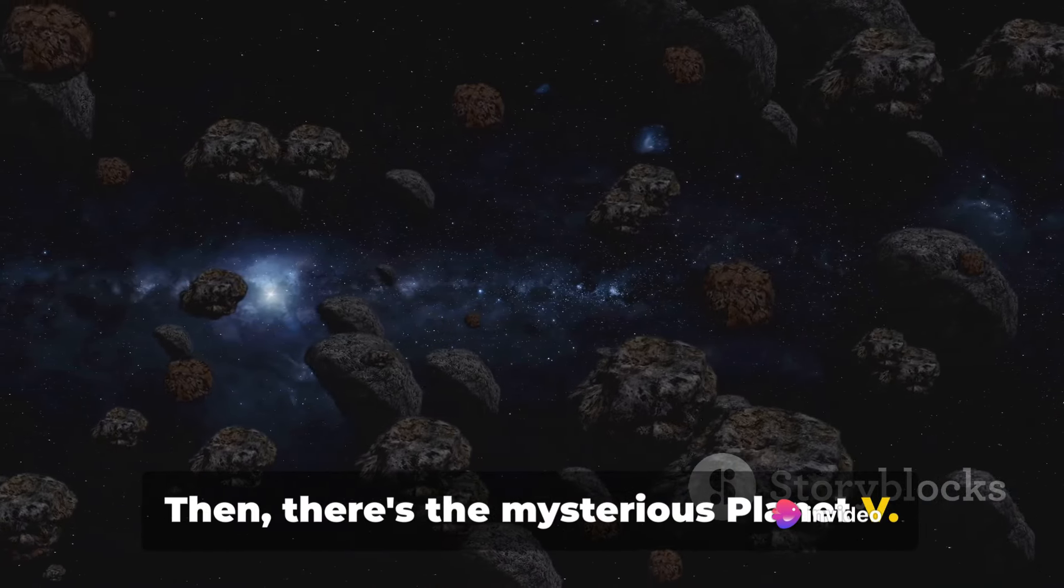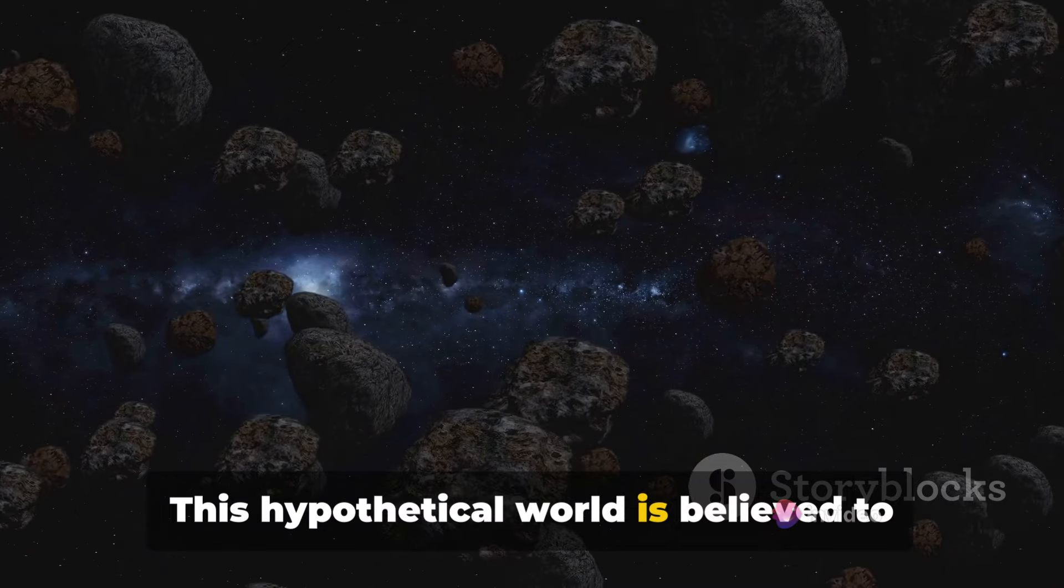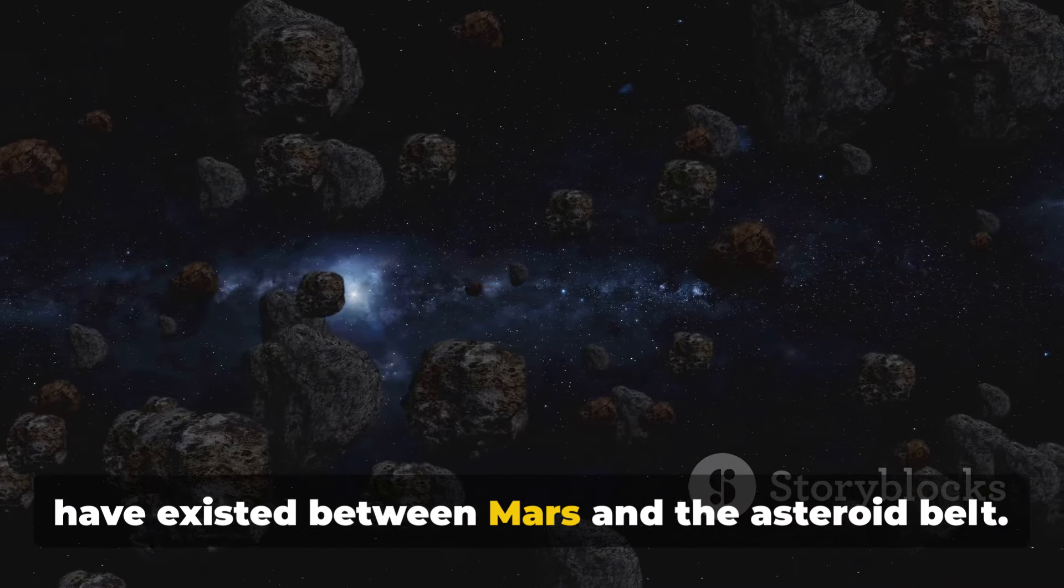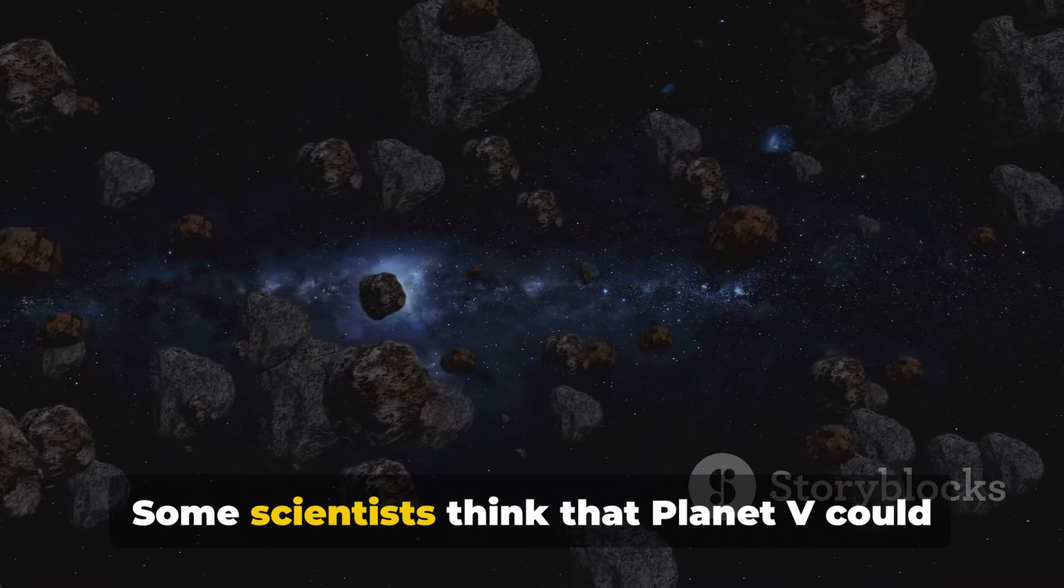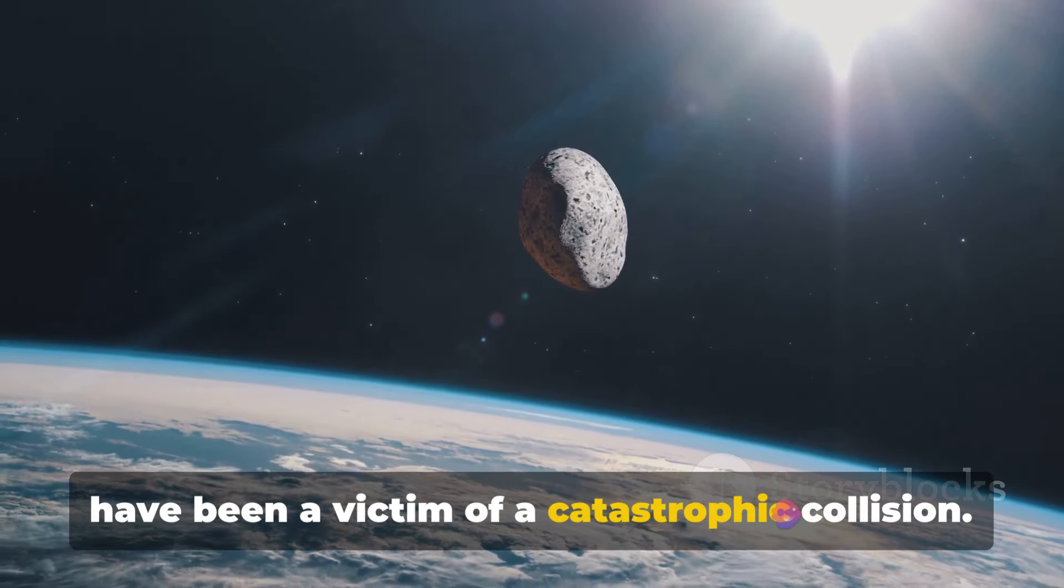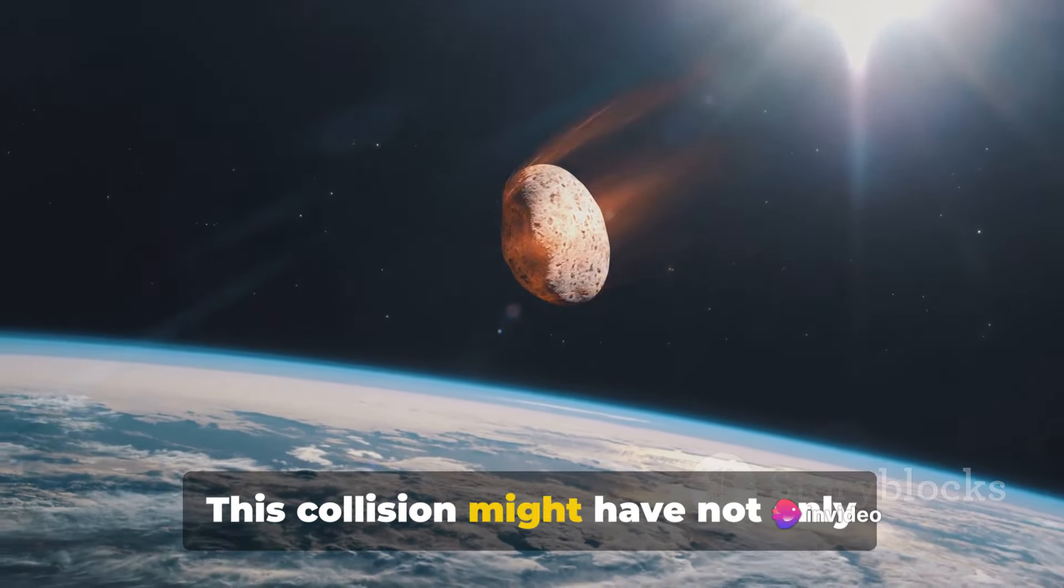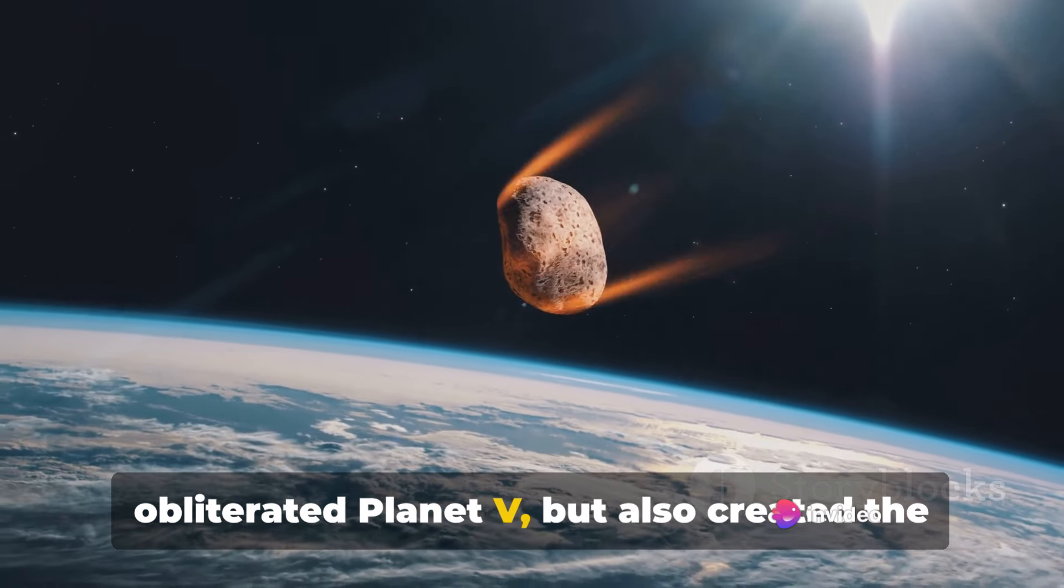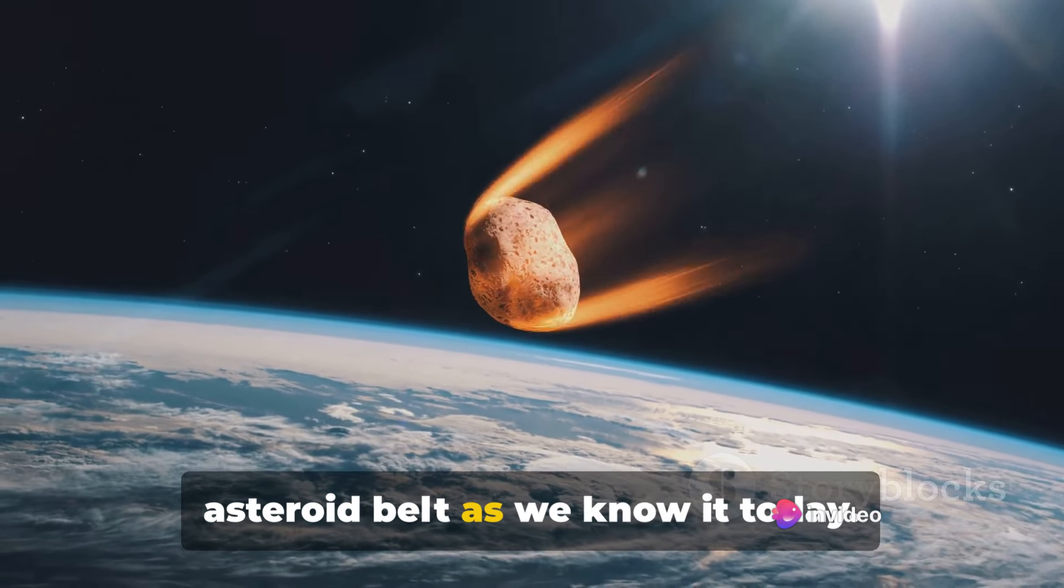Then there's the mysterious planet V. This hypothetical world is believed to have existed between Mars and the asteroid belt. Some scientists think that planet V could have been a victim of a catastrophic collision. This collision might have not only obliterated planet V, but also created the asteroid belt as we know it today.